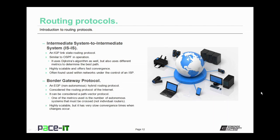Then there's Border Gateway Protocol, BGP. It's an exterior gateway protocol that's also a hybrid routing protocol. It is considered the routing protocol of the internet, and as a hybrid protocol it is often considered a path vector protocol. One of the metrics used is the number of autonomous systems that must be crossed, not individual routers. BGP is highly scalable, but has a very slow convergence time when changes do occur.